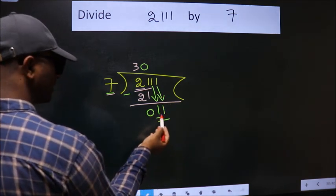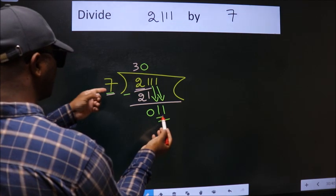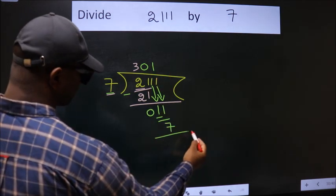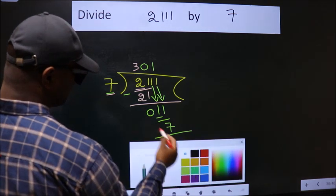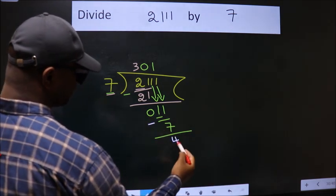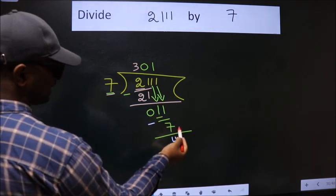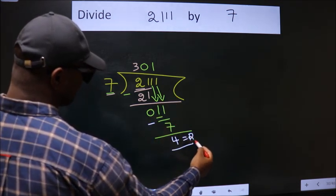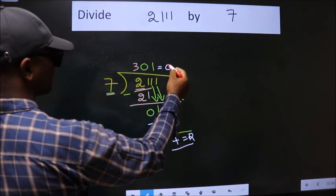So, 11. A number close to 11 in 7 table is 7 once 7. Now we subtract. We get 4. No more numbers to bring it down, so we stop here. This is our remainder. This is our quotient.